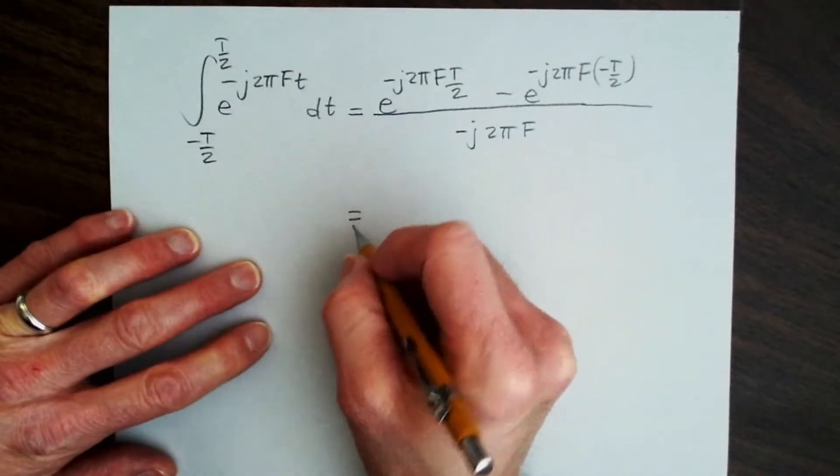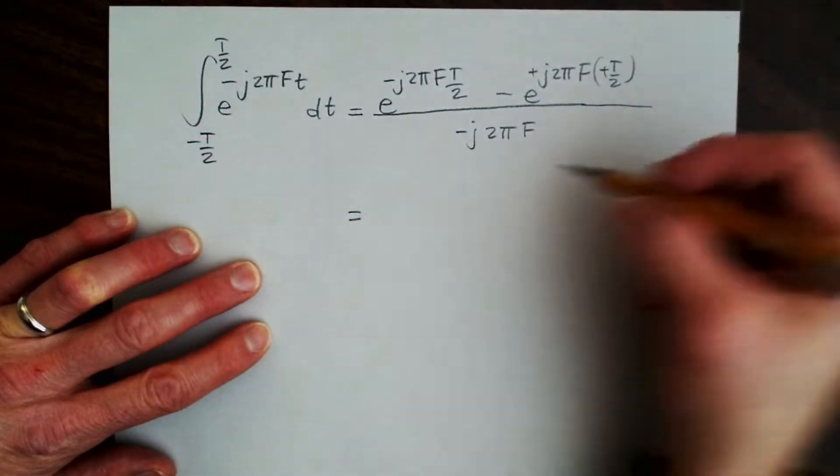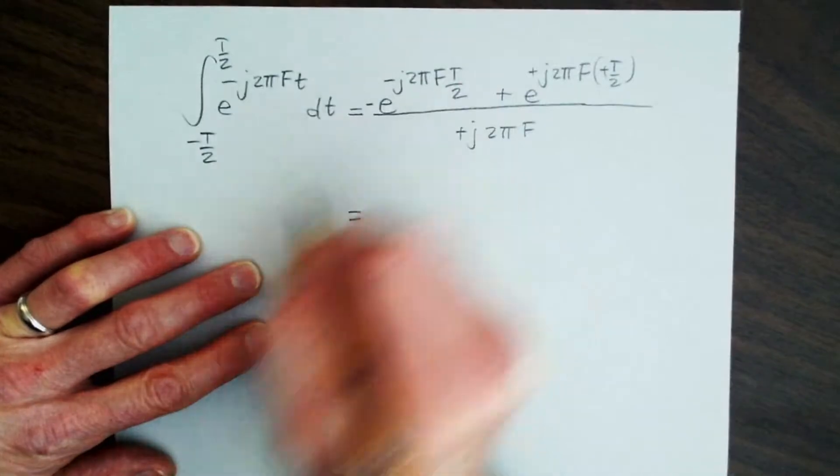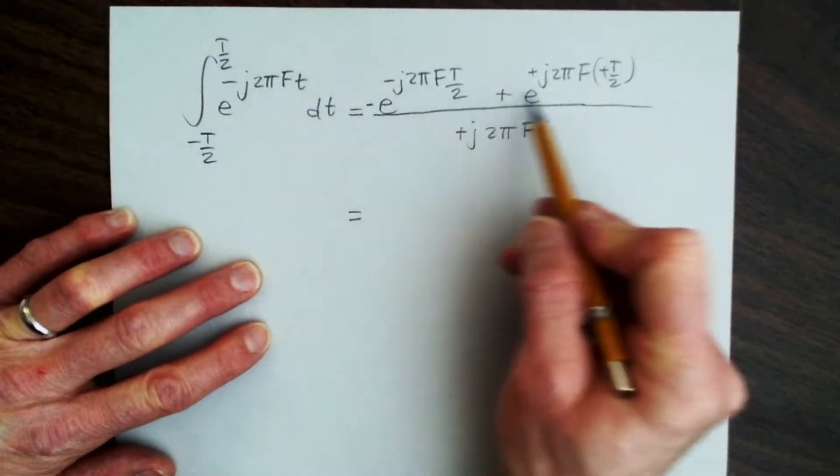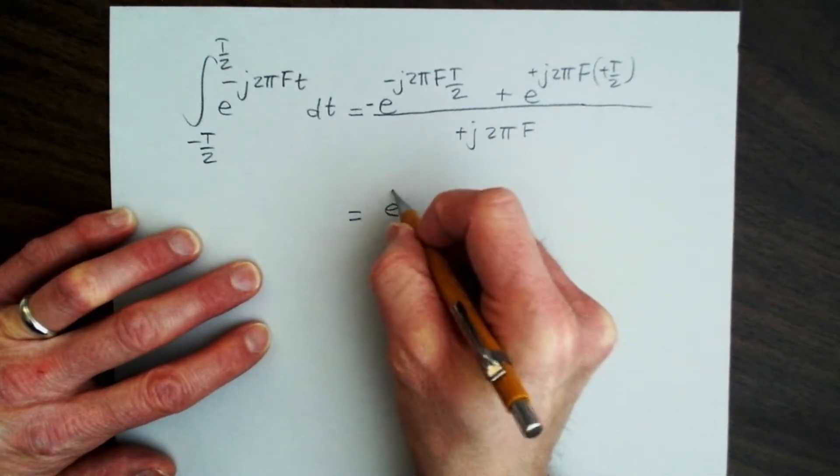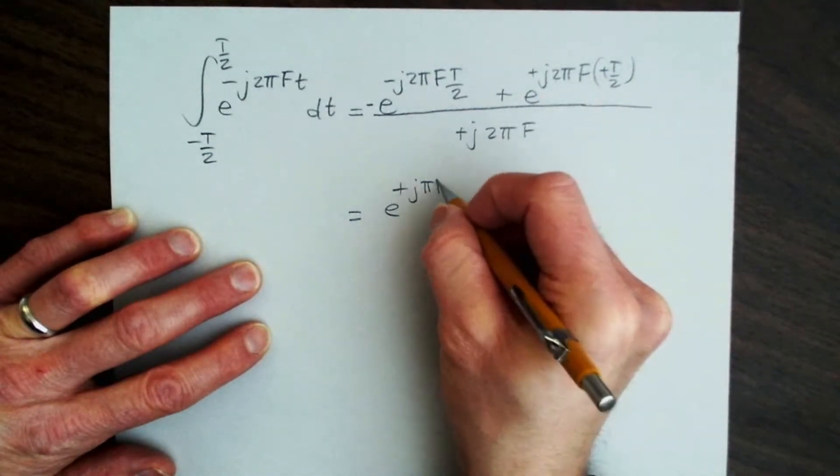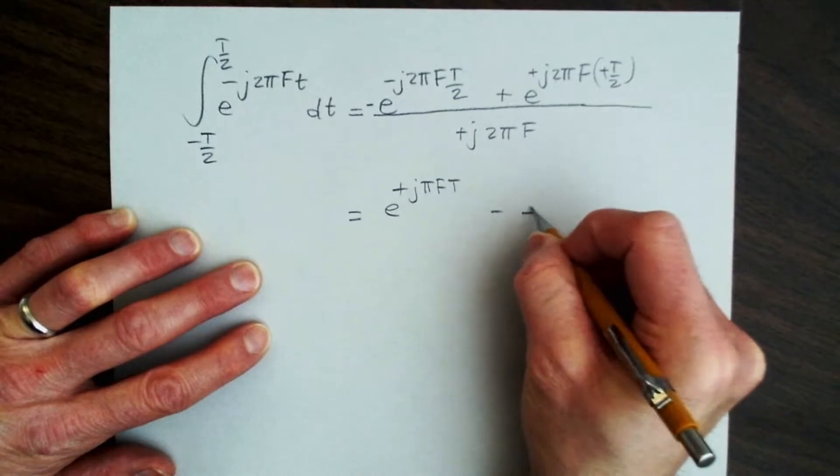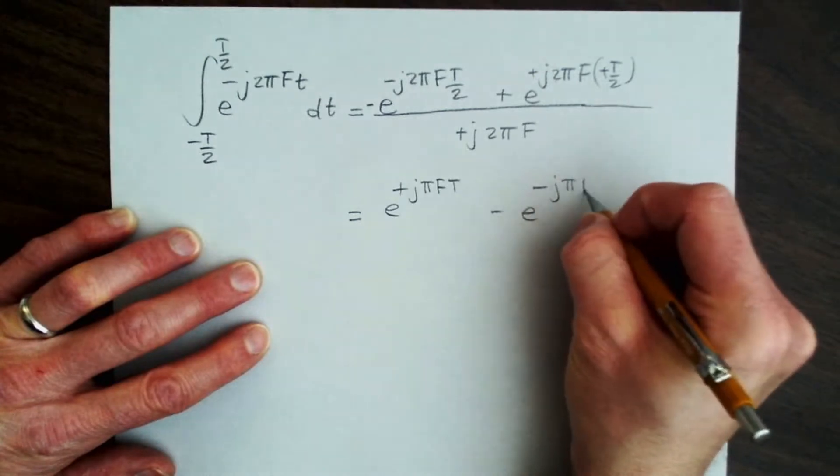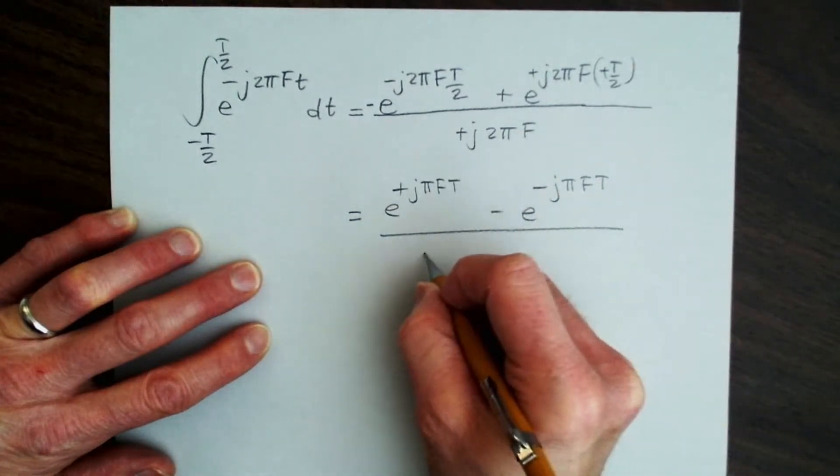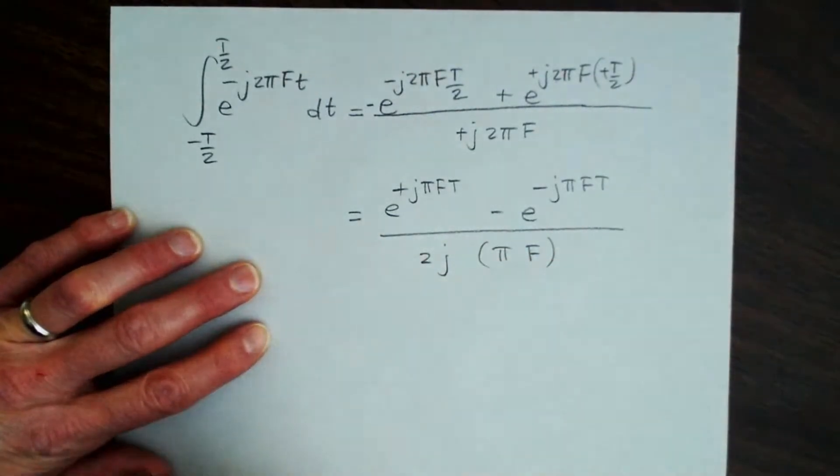If we simplify this a little bit, one of the things that's going to happen is that I can knock off these two negative signs here. I'm also going to change the signs on all of the terms to get rid of the negative in the denominator. And then when I rewrite this, I'm going to switch these two terms so that I have e to the plus j π, because the twos cancel, π f T minus e to the minus j—again I get the twos canceling—π f T, divided by 2j and π f, which I'm going to separate in the denominator like so.